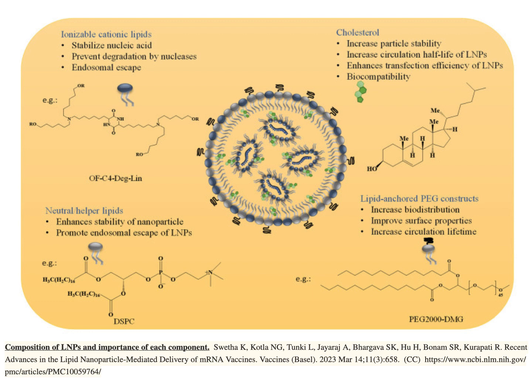Composition of LNPs and the importance of each component: Ionizable cationic lipids stabilize nucleic acid, prevent degradation by nucleases, and enable endosomal escape. Neutral helper lipids enhance stability of nanoparticles and promote endosomal escape of LNPs. Cholesterol increases particle stability and circulation half-life of LNPs, and enhances transfection efficiency. Lipid-anchored PEG constructs increase biodistribution, improve surface properties, and increase circulation lifetime.